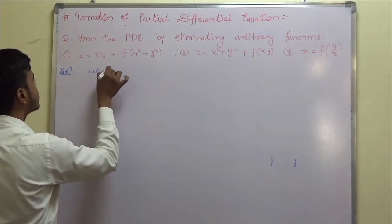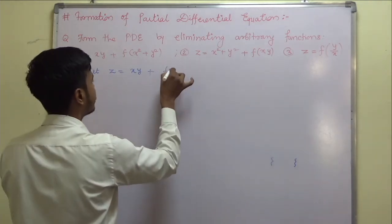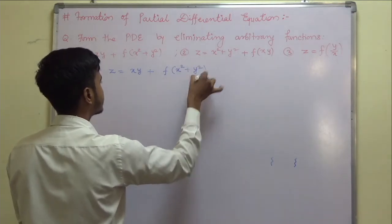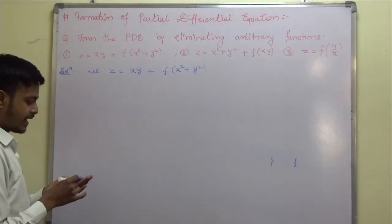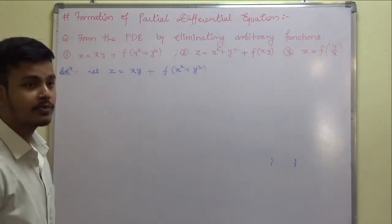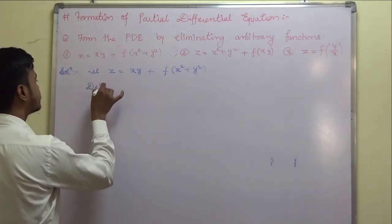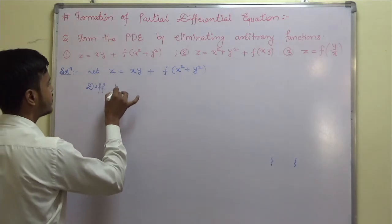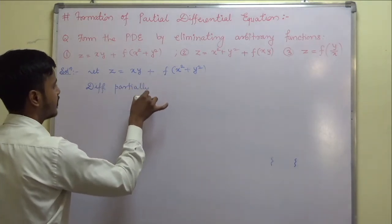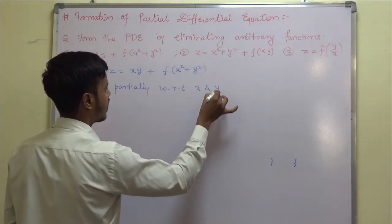Let us start with the first problem. Let z be equal to xy plus f of x squared plus y squared. We just have to differentiate partially with respect to x and y.